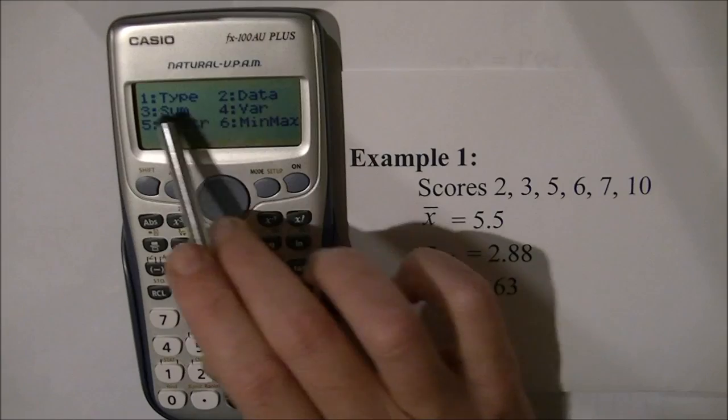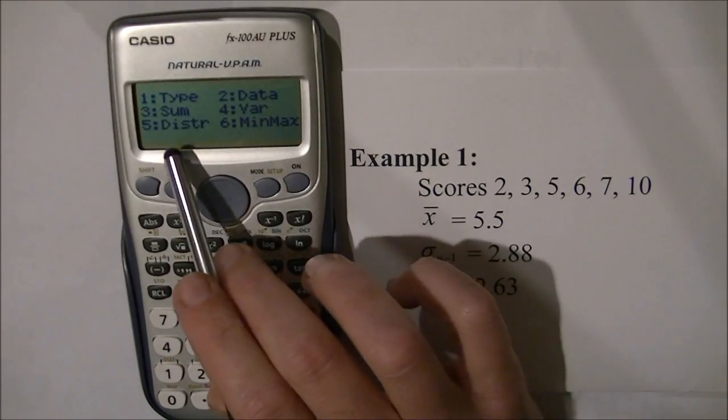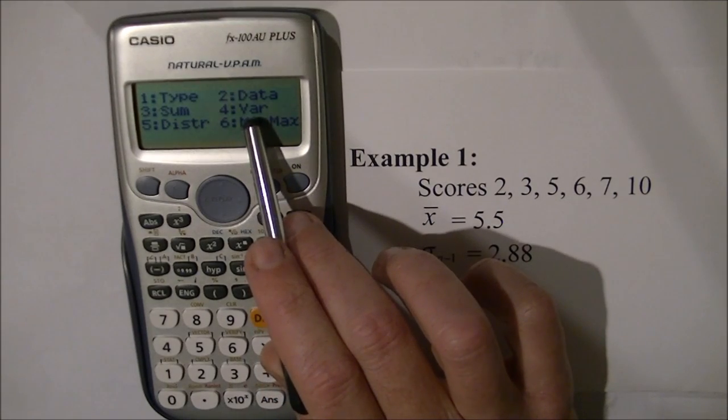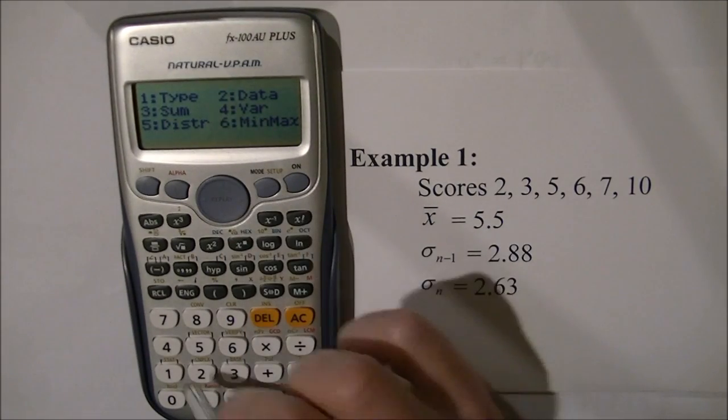These options come up: TYPE, DATA, SUM, VAR, DISTRIBUTION, MIN, MAX. I'm going to the VAR key, which is option 4.